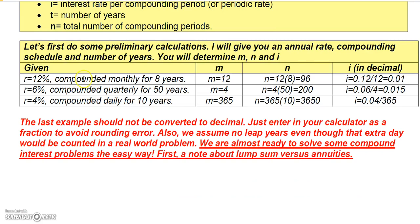Let's do some preliminaries to make sure you understand this. If the rate is 12% and you're compounding monthly for eight years, then m would be 12, n would be 12 times 8 or 96 compounding periods, and i would be 0.12 divided by 12, which is 0.01.